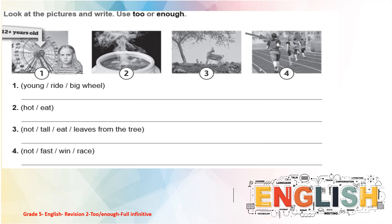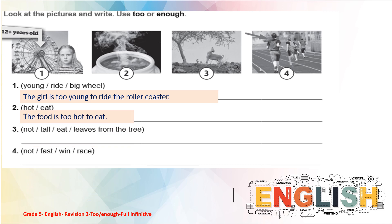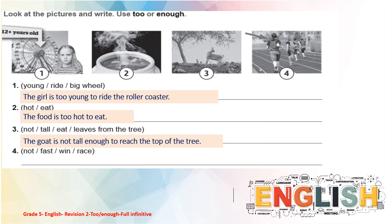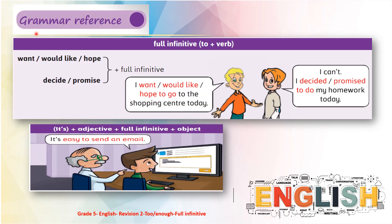Let's have another exercise — look at the pictures and write using 'too' or 'enough'. You can stop the video and do this exercise. Now let's see your answers: one — 'The girl is too young to ride the roller coaster.' Two — 'The food is too hot to eat.' Three — 'The goat is not tall enough to reach the top of the tree.' Four — 'The boy isn't fast enough to win the race.'